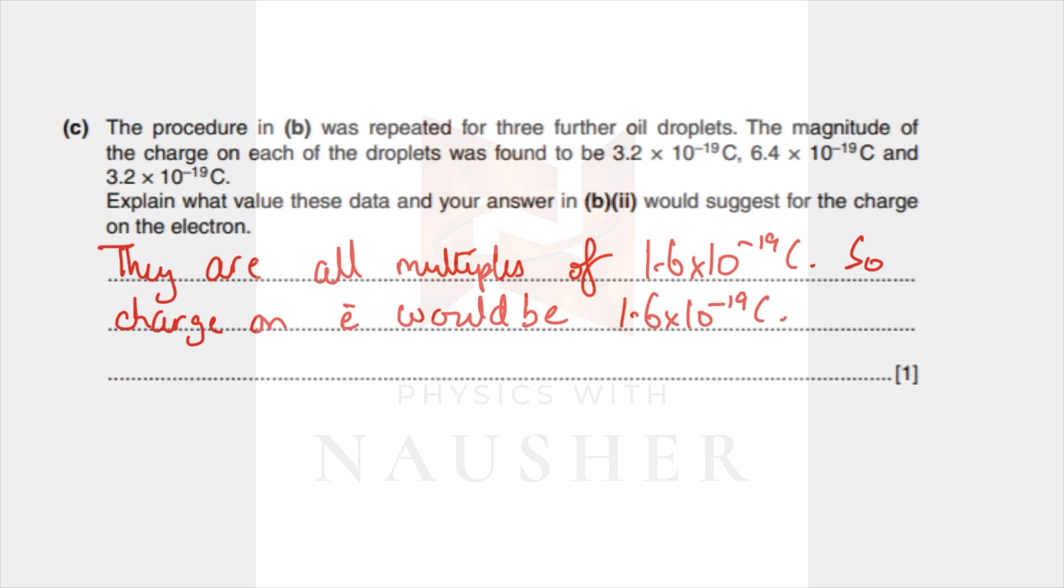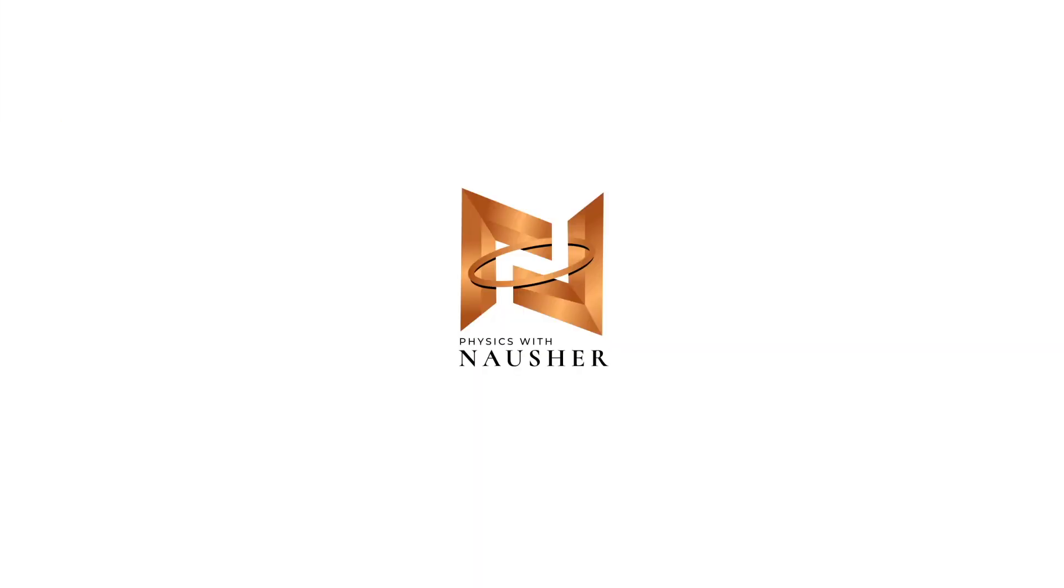The procedure was repeated for three further oil droplets, and you found the charges to be 3.2, 6.4, 3.2 - they're all multiples of 1.6. They're all multiples of 1.6, which means the fundamental charge was 1.6 times 10 to minus 19. That's exactly what they're asking you to find: 1.6 times 10 to minus 19.